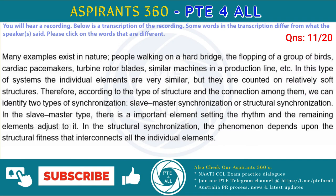Many examples exist in nature: people walking on a soft bridge, the flapping of a group of birds, cardiac pacemakers, turbine rotor blades, similar machines in a production line, etc. In this type of systems the individual elements are very similar, but they are mounted on relatively soft structures. Therefore, according to the type of structure and the connection among them, we can identify two types of synchronization: slave-master synchronization or structural synchronization. In the slave-master type, there is a dominant element setting the rhythm and the remaining elements adjust to it. In the structural synchronization, the phenomenon depends upon the structural stiffness that interconnects all the individual elements.